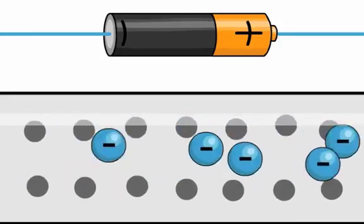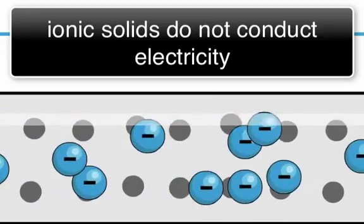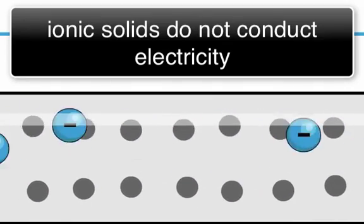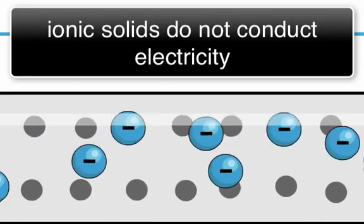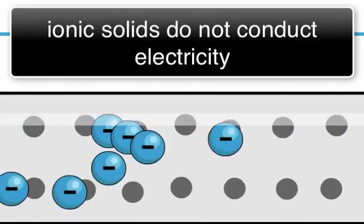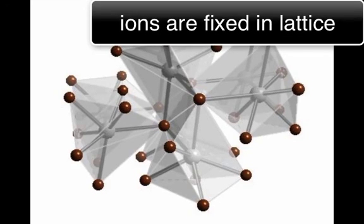Now this lattice structure is also the reason that solid ionic structures won't conduct electricity. They're made up of charged particles, they're made up of ions, but these ions are fixed in place, they're not free to move, so there's no charge carriers when ionic structures are solid.